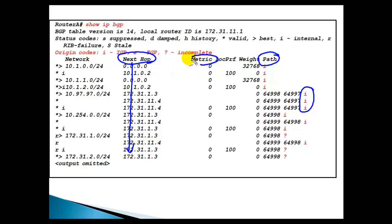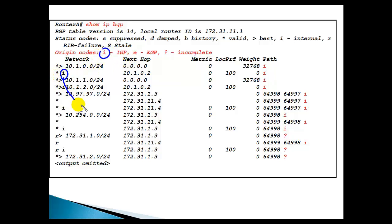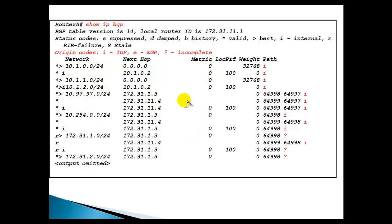In addition to AS path, next hop, and origin, the show IP BGP output also shows other attributes such as MED (metric), local preference, and weight — all of which we'll cover in upcoming videos. These attributes can also affect best path selection. An asterisk '*' in the output means the route is valid, and the greater-than symbol '>' indicates the best route.